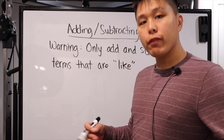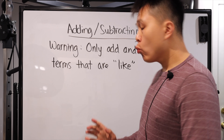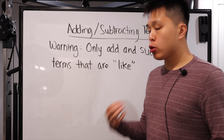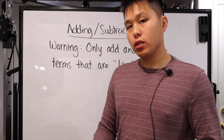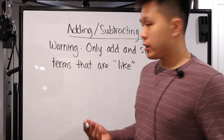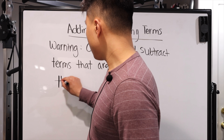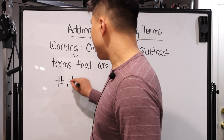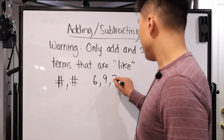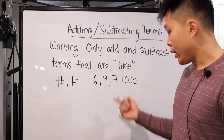Before I give you the step-by-step on how you can add and subtract terms, here's a warning: you can only do that if you are adding or subtracting like terms — some say similar terms. The concept is fairly simple even though the vocabulary is a little confusing. If you have two numbers, you can always add or subtract them. If you have 6, 9, 7, 1000, or whatever, you can always add or subtract them from each other.